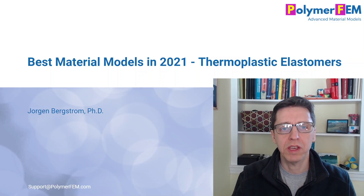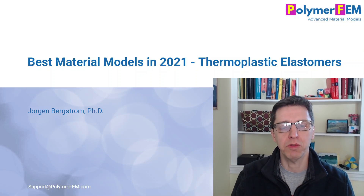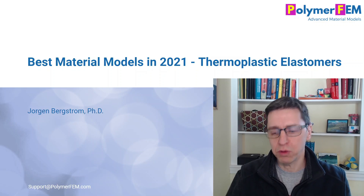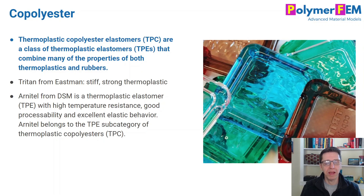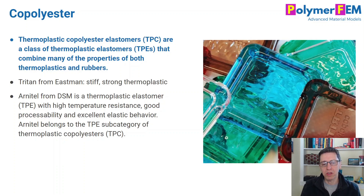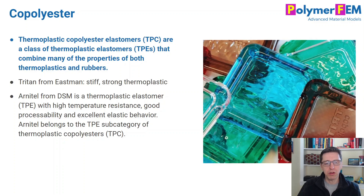Hey and welcome. In this video I will show you how you can really improve the accuracy of your finite element simulations by selecting the right material model. I will focus on a very specific material called a copolyester, which is a kind of thermoplastic elastomer, TPE. This is a relatively soft material used in many applications with properties between a thermoplastic and a rubber-like material, which causes challenges in calibration and material selection. Stick around and I'll show you how it works.